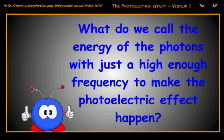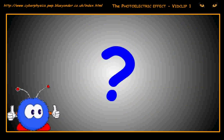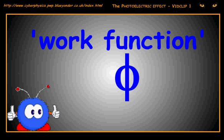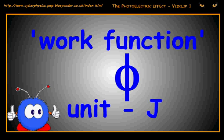What do we call the energy of the photons with just a high enough frequency to make the photoelectric effect happen? The energy is called the work function of the metal. It is given the symbol phi and it is measured in joules.